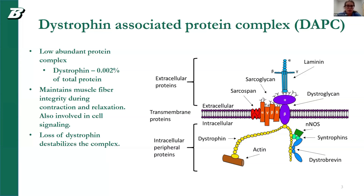Loss of the dystrophin protein destabilizes the complex as a whole, and our goal is to create therapies for DMD patients that allow them to produce their own dystrophin protein.